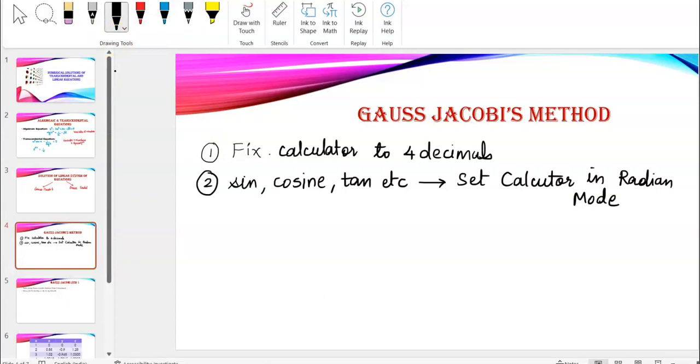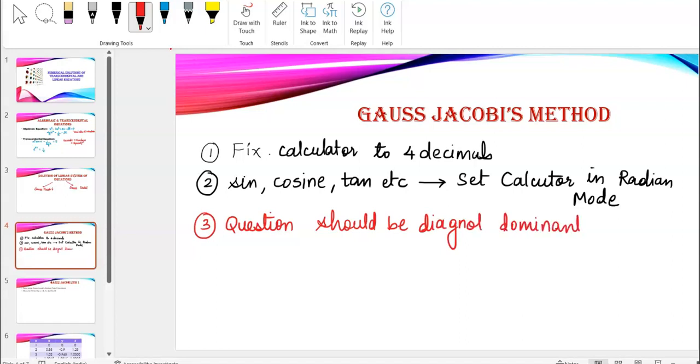Now, coming specifically to Gauss Jacobi's method, what you need to remember is, your question should be diagonal dominant. Question should be diagonal dominant. Now, what is diagonal dominant and what if the question is not diagonal dominant? What to do? We will understand with the help of an example.